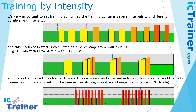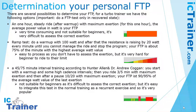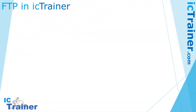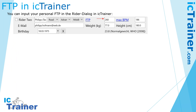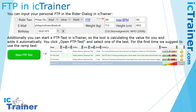That's very effective training because you can reach a very good effect in a short time, and time is very often a limitation we face. In IC Trainer, you can input your personal FTP value in the rider dialog — that's very simple — or you can start the FTP test and the tool calculates the value for you automatically. Click 'Open FTP Test' on the wizard tab and select one of the test protocols.